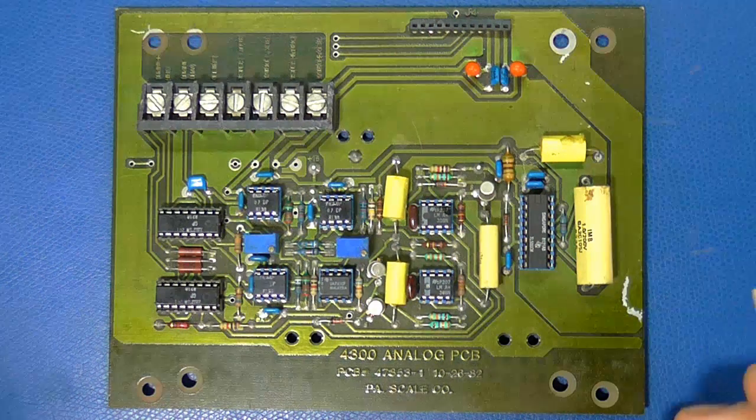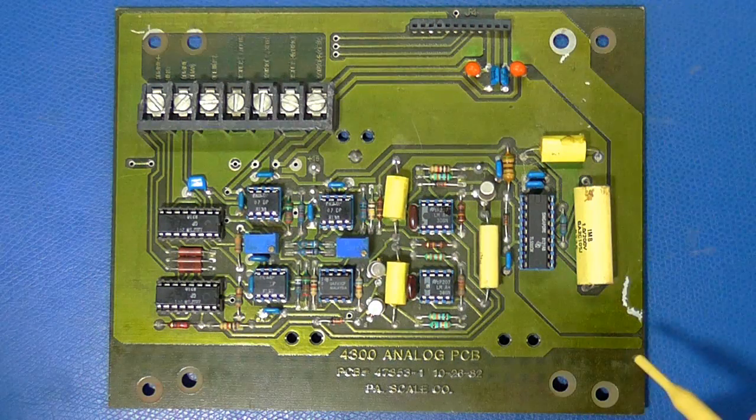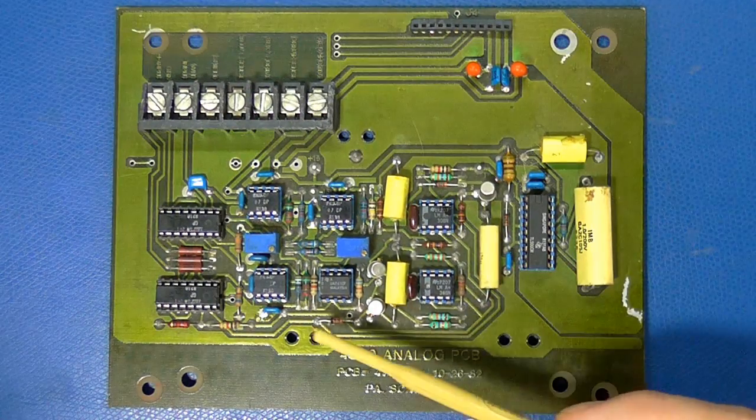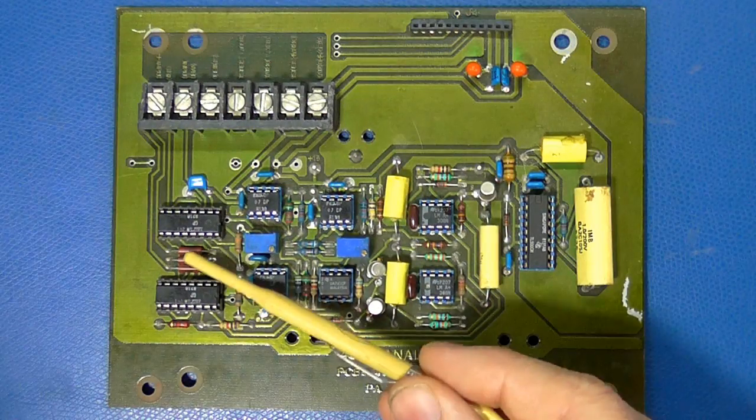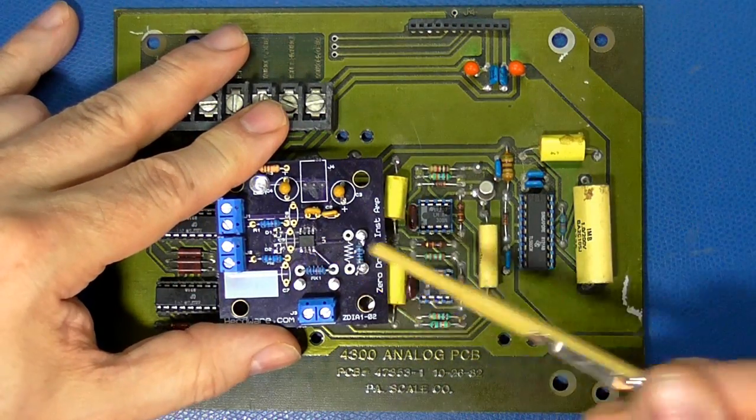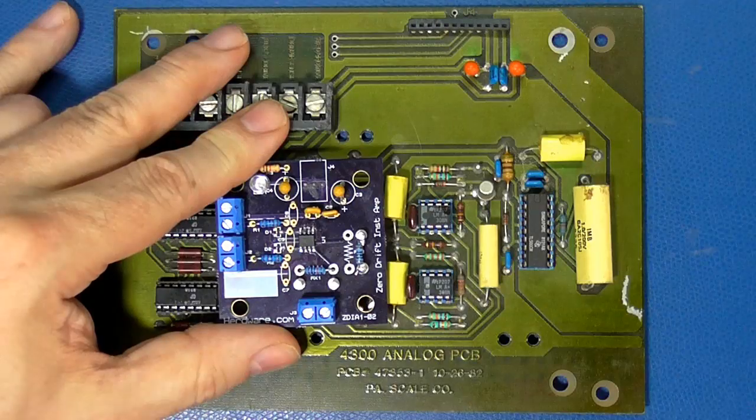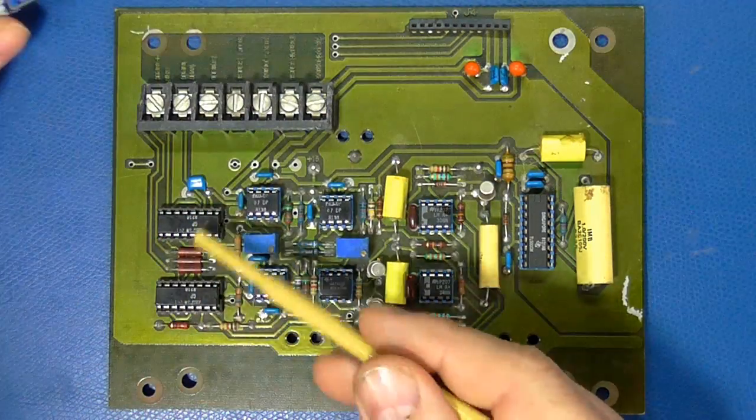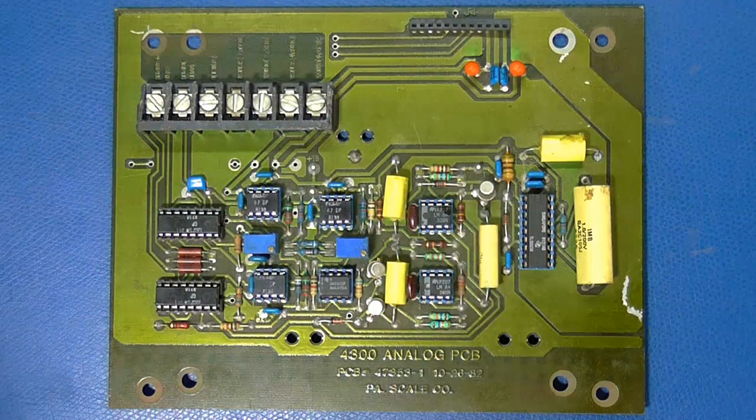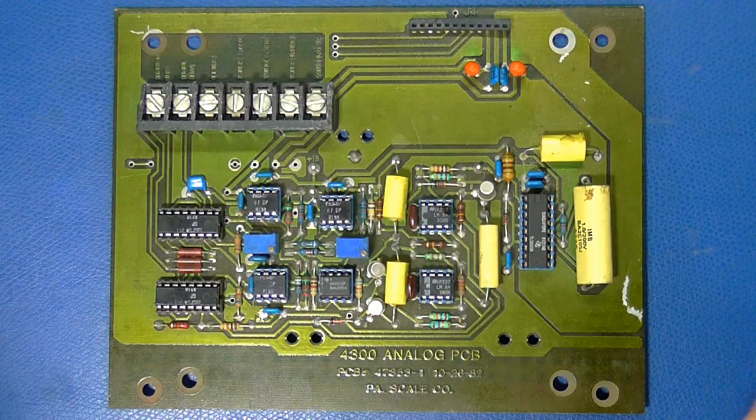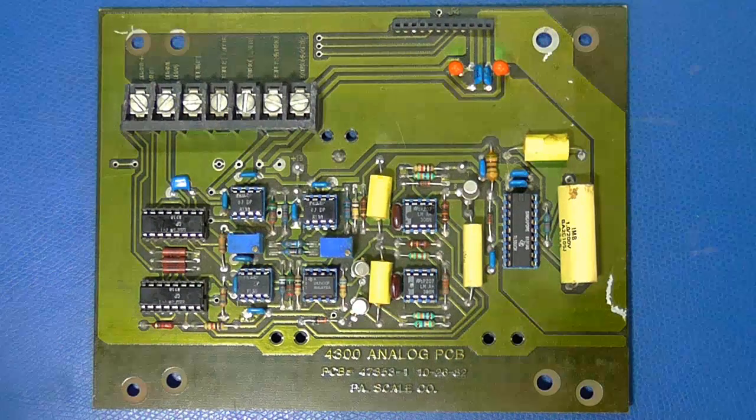This would still work today. It's just we can do it a lot smaller. This whole front end with the gain and zero reference checking is now done inside instrumentation amps. Here's the zero drift instrumentation amp we talked about in the past, which is chopper-stabilized, and that's essentially what this was doing. Other than that, it's still viable today.